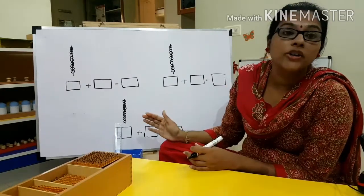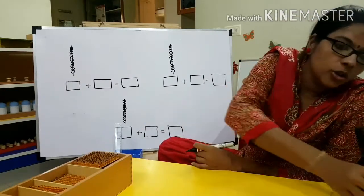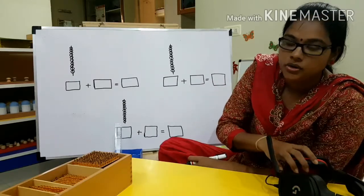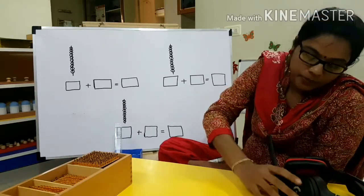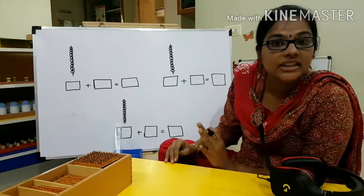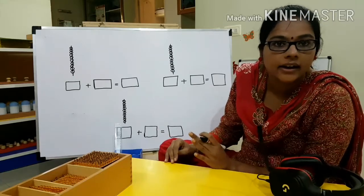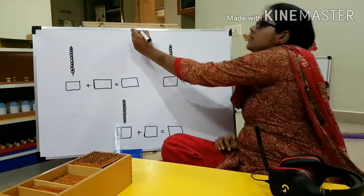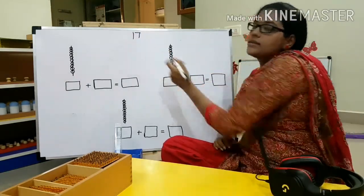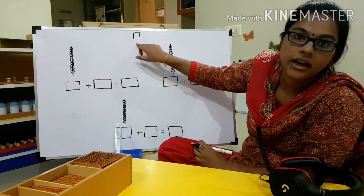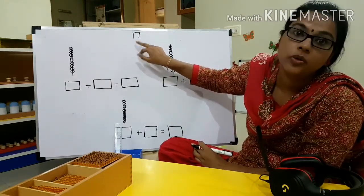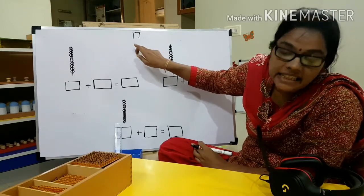Now this is what we are going to do in our homework note. We saw up to 17 last week — ten and 7 makes 17. Today we are going to make 18 in the notebook. Right? 18.